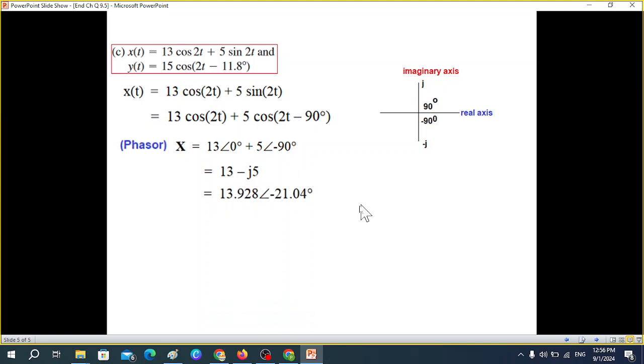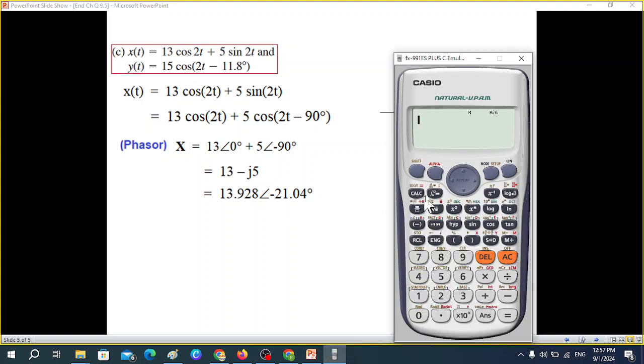Now converting to polar form using the calculator: magnitude is square root of (13² + 5²) = 13.928, and the angle is arctan(-5/13) = -21.04°. So in proper phasor form: 13.928 angle -21.04°.